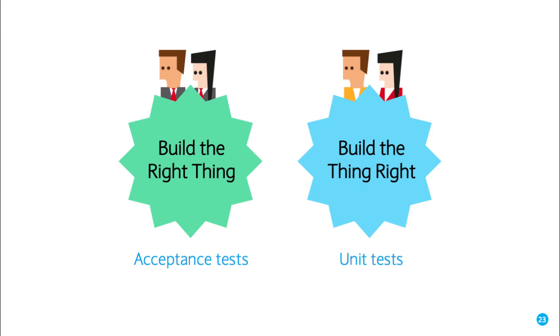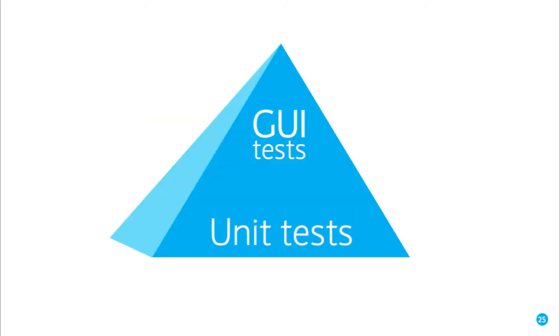Your acceptance tests will be around building the right thing, and the unit tests will be building the thing right. So that's the business doing the acceptance and the developers doing the unit tests, generally working on them. And be careful to make sure you have a pyramid with loads more unit tests than GUI tests, because unfortunately, even though the computers are working at it, the GUI tests are more expensive to run in terms of compute, and unit tests are cheaper and quicker to write.